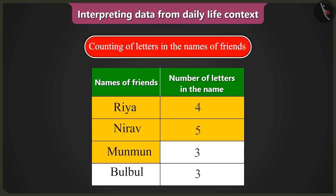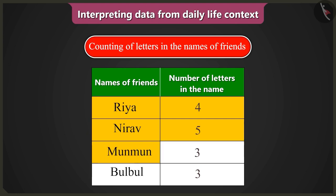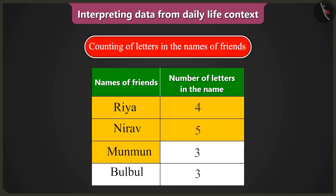Now the third name is Munmun. There are not three, but six letters in it. You counted M, U, and N in Munmun, so you wrote three letters. But these three letters come two times, so that is a total of six letters. I have to count all the letters that come in the name Munmun, no matter how many times they come. So here the number of letters will be six.